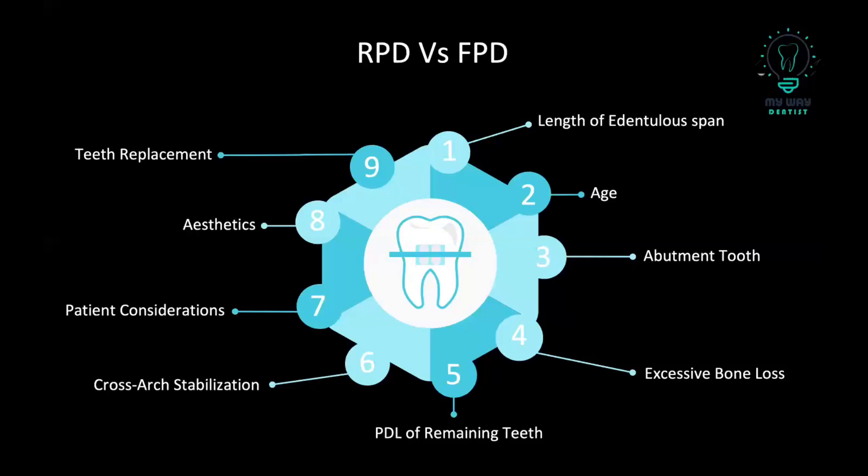The final point is teeth replacement or immediate teeth replacement. When the patient loses a tooth and already has an RPD, you can just do relining and add the tooth, which is easier. On the other hand, when you have an FPD and the patient loses a tooth, this might change the whole treatment plan for the patient.